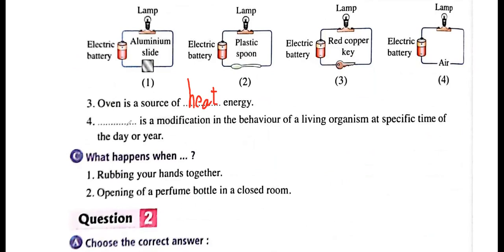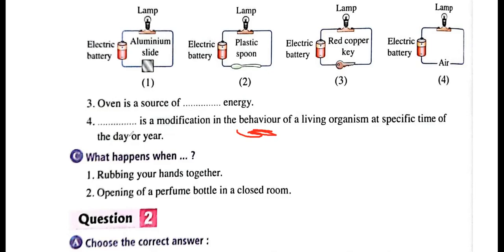What is a modification in the behavior of a living organism at a specific time of the day or year? Once you hear 'modification,' think about adaptation. Since the question says 'behavior' and 'specific time,' this is behavioral adaptation. Behavioral adaptation is a modification in the behavior of a living organism at a specific time of day or year.